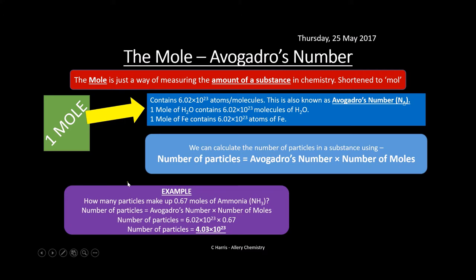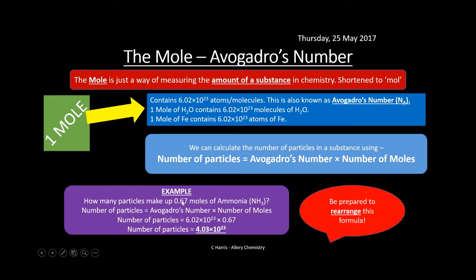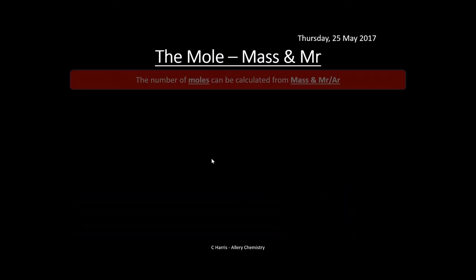For example: how many particles make up 0.67 moles of ammonia? Number of particles = 6.02 × 10²³ × 0.67 = 4.03 × 10²³. This is a large number, as you'd expect. Be prepared to rearrange this formula — it can be used in various ways.